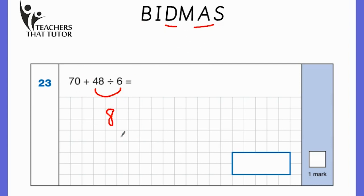You can see how I'm using BIDMAS to help me here. So I'm going to do 70 plus the 8 that I've now got from doing this part of the question, which gives me a final answer of 78. So 78 would be the correct answer for this question, and we can write that in the box provided here to get that mark.